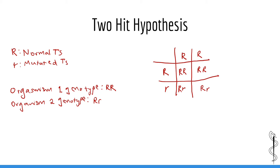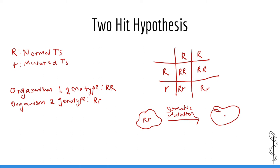Remember, autosomal dominant means that only one copy of a gene is needed to express the phenotype — in this case, either cancer or no cancer. Organisms with little r will carry a germline mutation of tumor suppressor R and therefore will only have a single functional copy in each of their cells. Although these organisms will not be born with cancer, they have an increased risk because they only need a single somatic mutation in one cell to completely knock out their tumor suppressor. The way to think about autosomal dominant cancer syndromes is that it is the increased risk of cancer which is inherited in an autosomal dominant fashion, not the cancer itself.